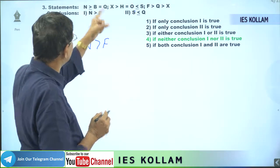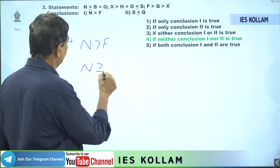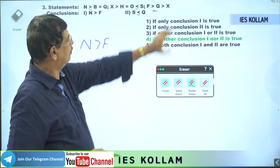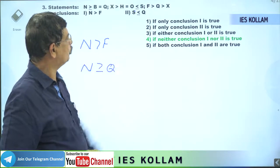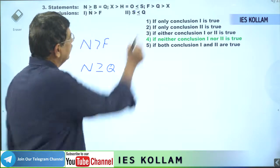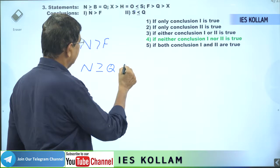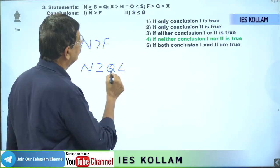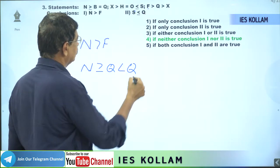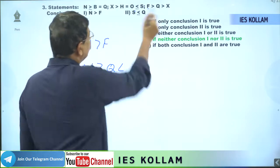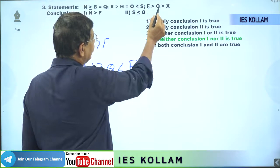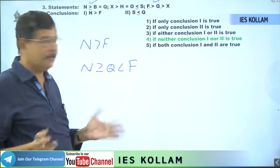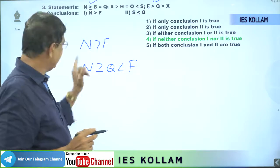Here, n is in the first statement. Therefore we can start from there: n greater than or equal to q. We can take q because f and q are having a connection. So n greater than or equal to q, and then q less than f is also there — that means q less than f. Connecting only the first statement and this third statement, n greater than f will definitely be wrong.